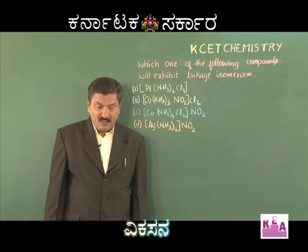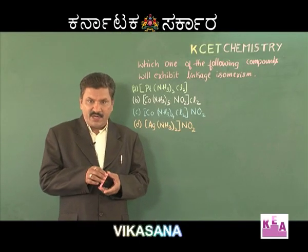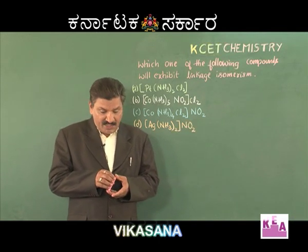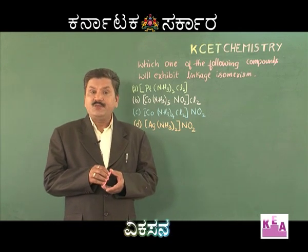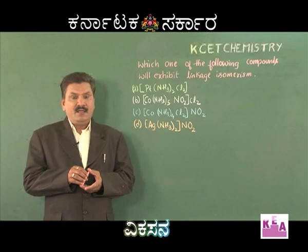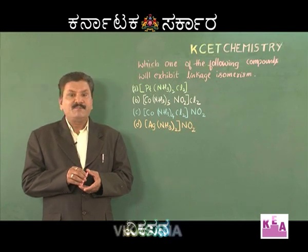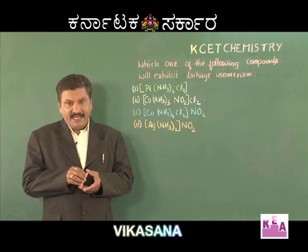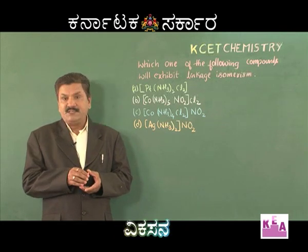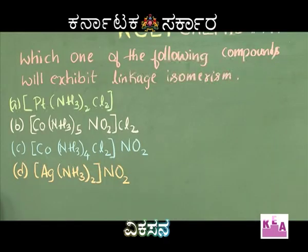So far we have covered basic concepts of coordination compounds and nomenclature. Another important area is isomerism in coordination compounds. Coordination compounds generally exhibit structural isomerism as well as stereoisomerism. In structural isomerism we have ionization isomerism, coordination isomerism, linkage isomerism, and solvate isomerism. In stereoisomerism we have geometrical isomerism and optical isomerism.